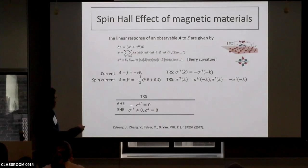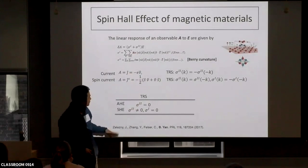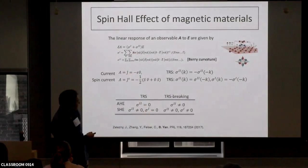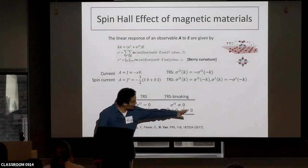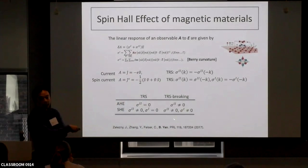If you have time-reversal symmetry, for anomalous Hall we care about the Berry curvature part. For spin Hall, we also care about the Berry curvature part, because the first term is zero. But if we have time-reversal symmetry breaking — if it's magnetic — then the first part is non-zero. That means for a magnetic system, if we care about the spin current, the spin Hall effect, there should be a new term.